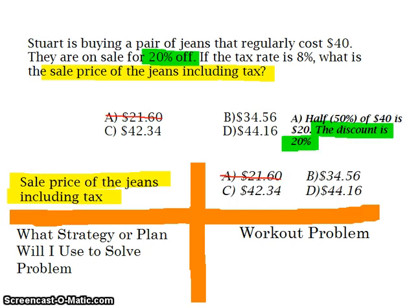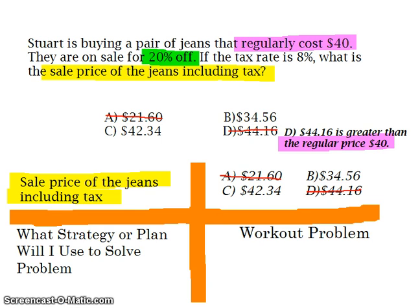Now, what answers can we eliminate? We know that we can eliminate A. Our regular cost is $40.00, and answer choice A is $21.60. Well, we know that half of 40 is 20 — 40 divided by 2 is 20 — but our discount is only 20% off, so 50% off is too much. We can go ahead and strike out answer choice A because we know that it's not the correct answer. Let's take a look at D. We know that we can eliminate D as well, because D is $44.16. That's more than even what the regular cost is, so we know that answer choice is not correct. We're striking it out.